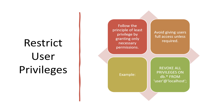Restricting user privileges is very important. The principle of least privilege means giving users only the access they need to perform their jobs. Avoid granting superuser or administrative privileges unless absolutely necessary. For instance, use REVOKE ALL PRIVILEGES ON db.* FROM 'user'@'localhost' to remove all privileges from a user. In a content management system, only editors should have permission to modify articles, while regular users should only be able to read them. Make sure you only grant permissions that are absolutely necessary, and revoke any unused ones.